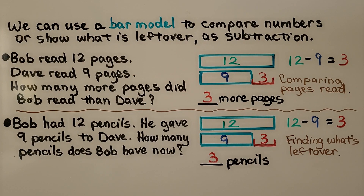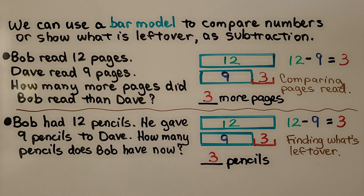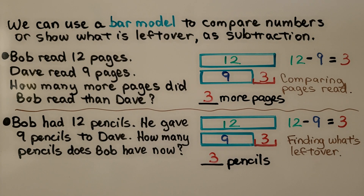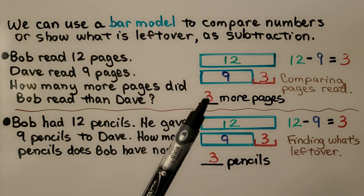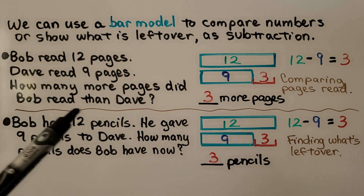We can use a bar model to compare numbers or show what is left over as subtraction. Here's a problem: Bob read 12 pages and Dave read 9 pages. How many more pages did Bob read than Dave? Bob is 12, Dave is 9, and we need to find the difference. 12 minus 9 is 3, so Bob read 3 more pages.